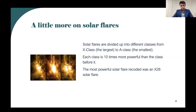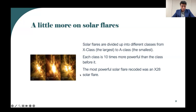Because the particles travel at the speed of light, we only have 8 minutes to protect against it. It doesn't directly affect humans, but it will affect electronics and power plants. The most powerful solar flare recorded was an X-28 solar flare. On the left, we can see three solar flares happening within 24 hours.